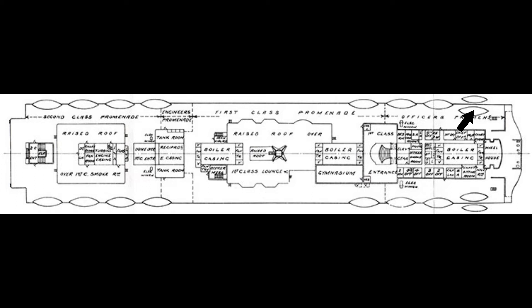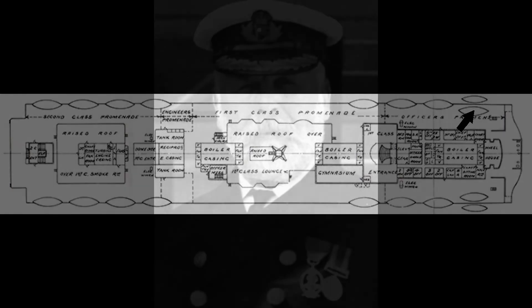Collapsibles A and B are washed overboard. At this point, Captain Smith declares, 'Every man for himself.'